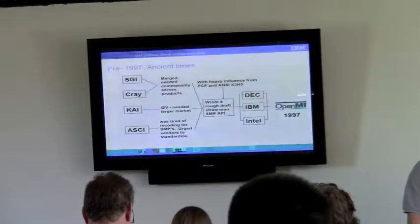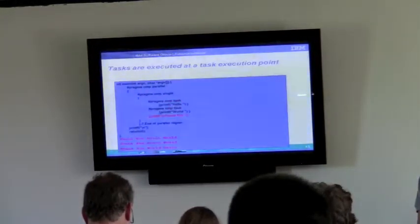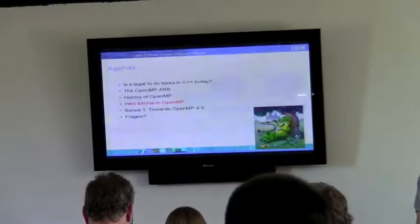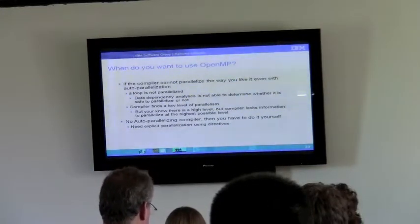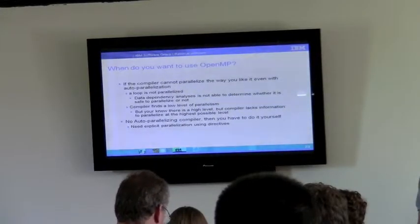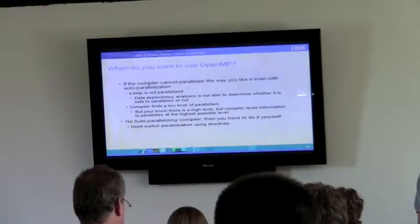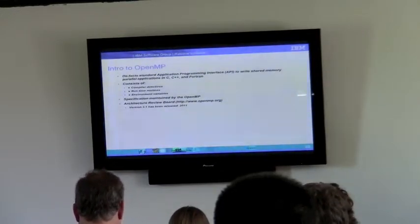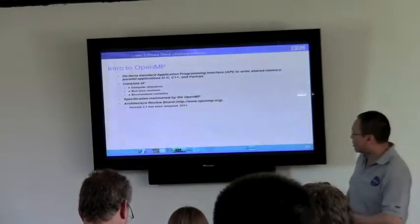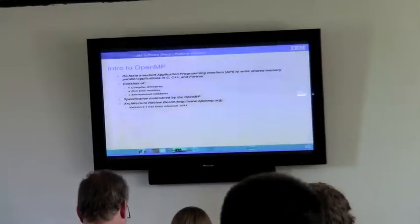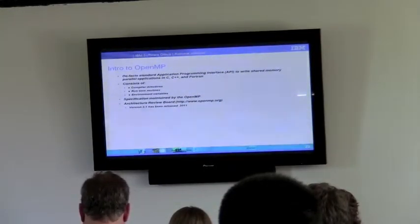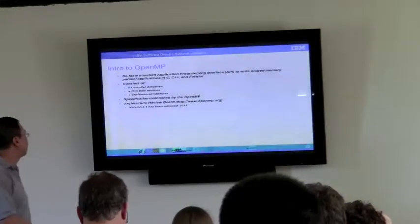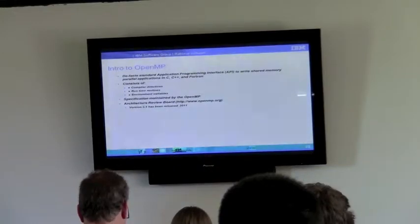We just went over a bunch of examples about how tasks are done in OpenMP, so let's get into a little bit of detail in terms of intro. OpenMP is a de facto standard application program interface. It's one of the easiest things to work with, really. The specification is no more than about 200 pages long — when was the last time you saw a specification that was 200 pages long? Basically three things: compiler directives in the form of pragmas, runtime routines which you can call as a library function API, and environment variables that you set from the start of the program.